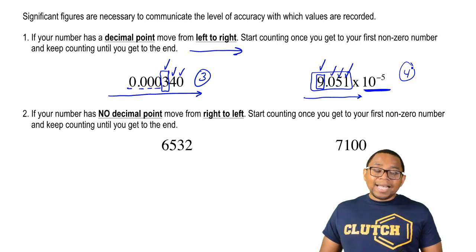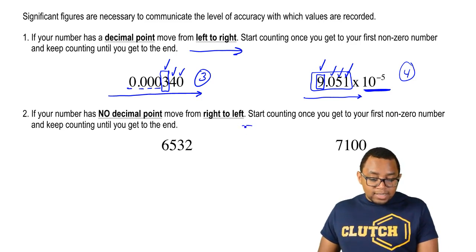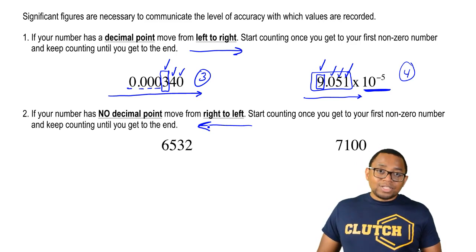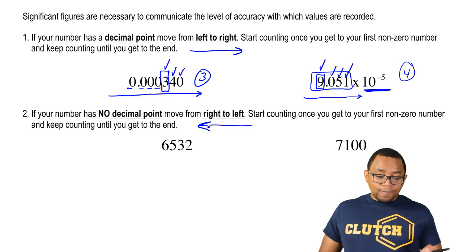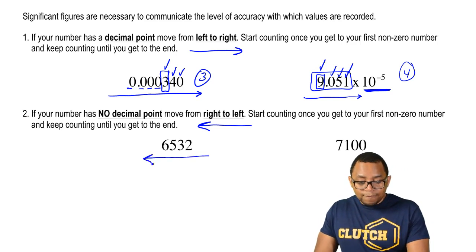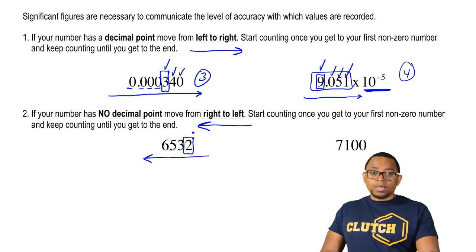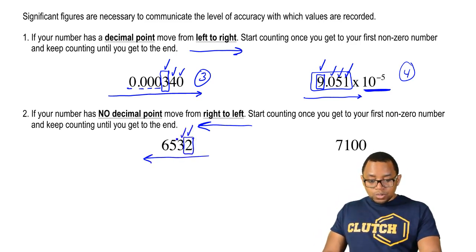Now, if your number has no decimal point, move from right to left. Again, start counting once you get to your first non-zero number and keep counting until you get to the end. Our first non-zero number here is two, so we start counting there — one, two, three, four.